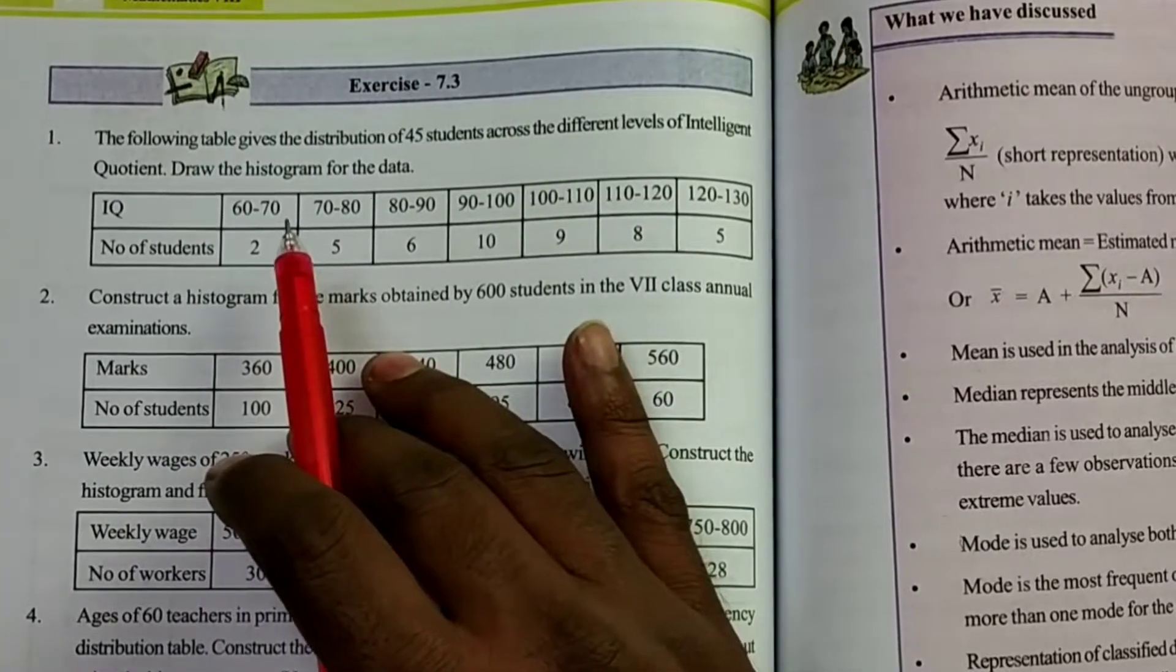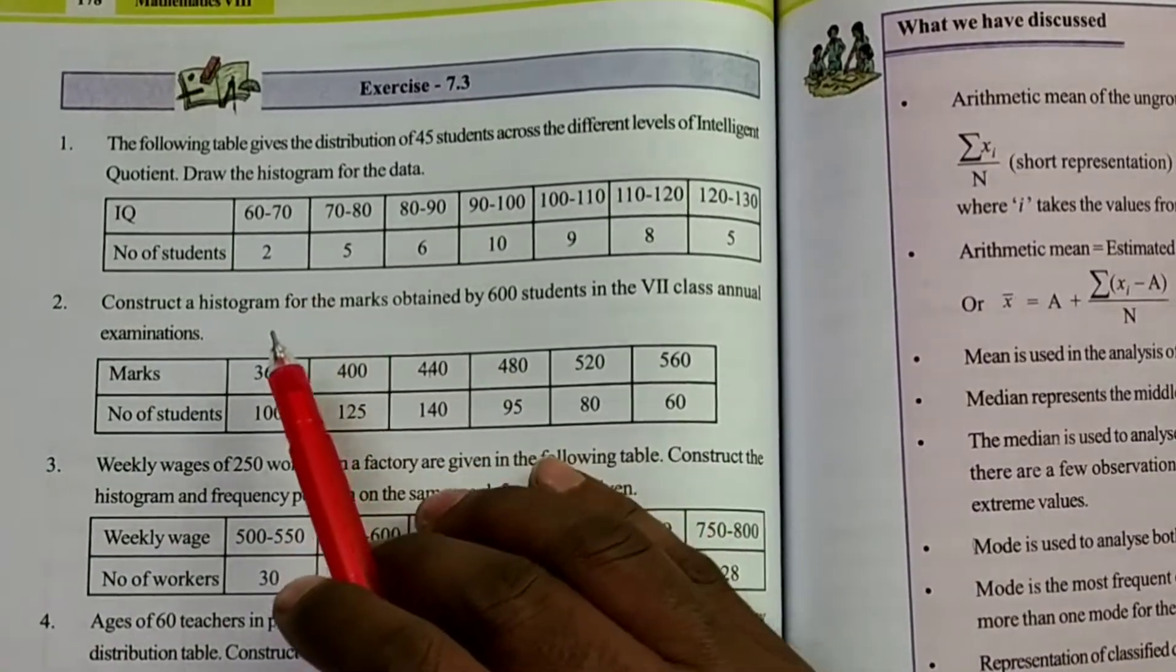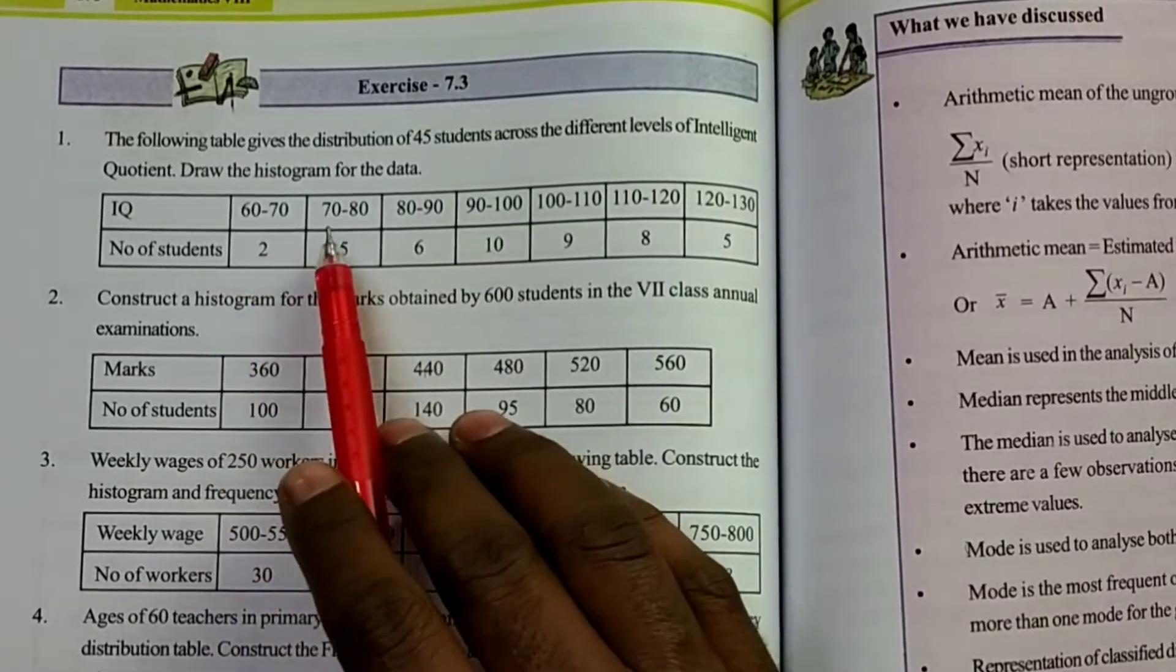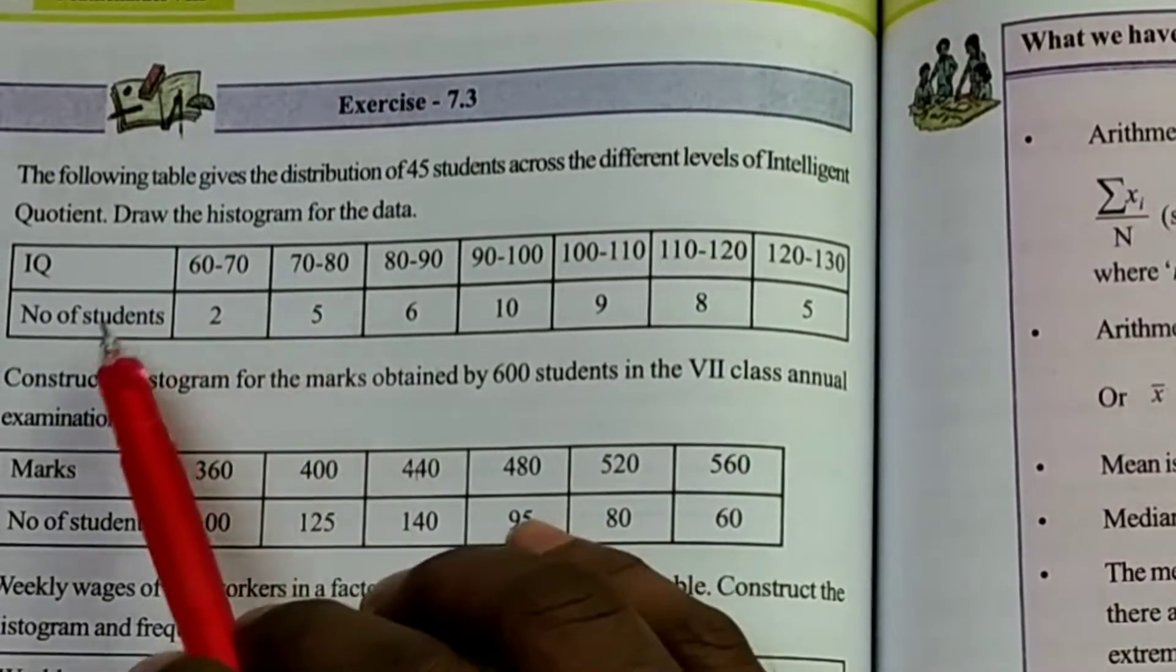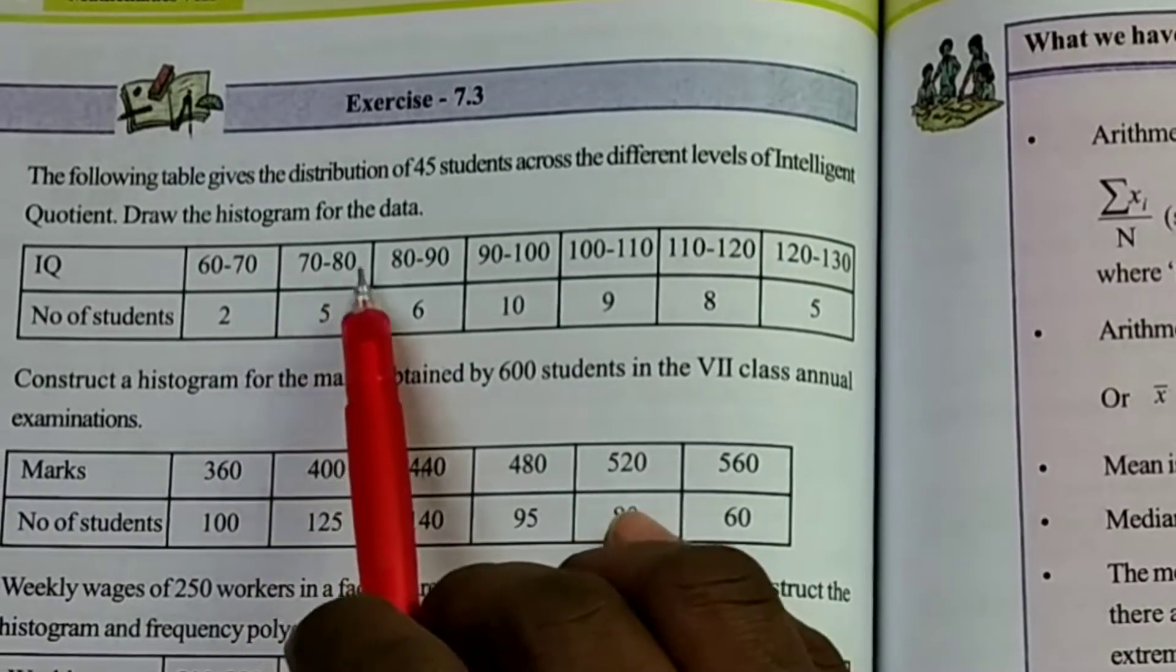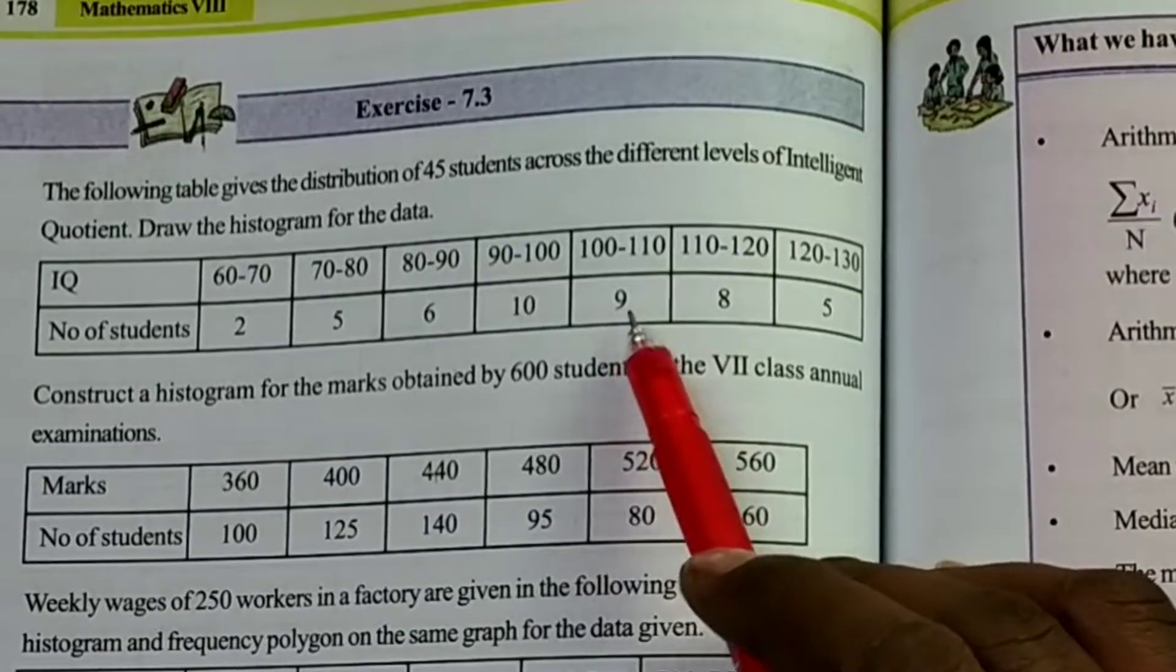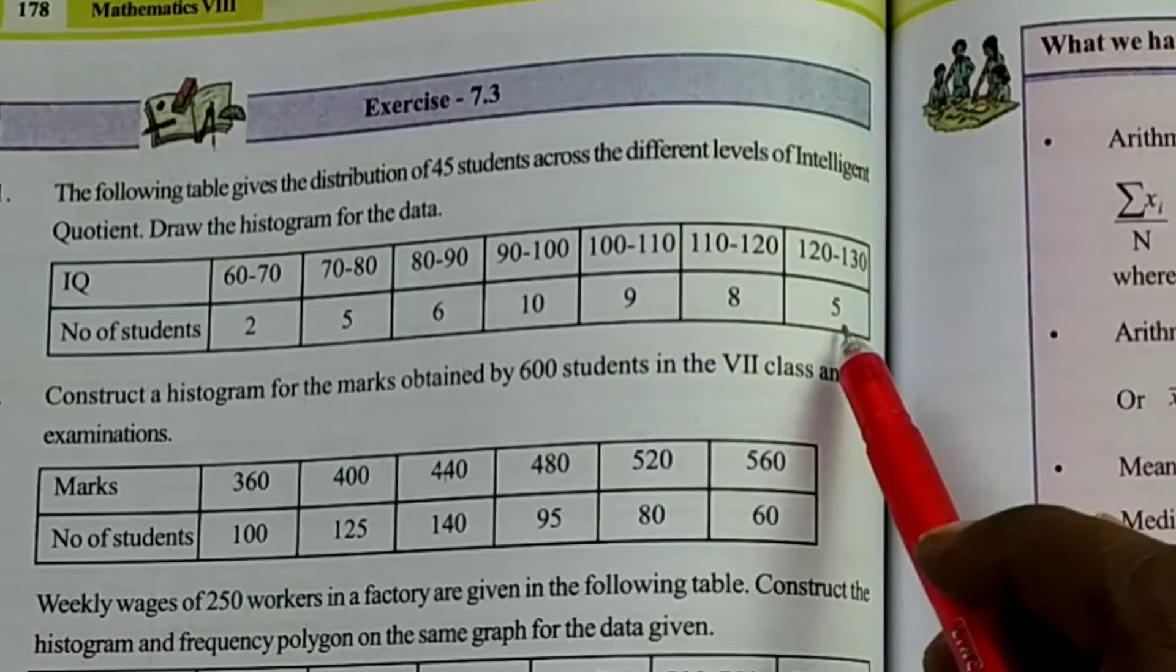Histogram consists of rectangles. So on the graph sheet, we have to draw the rectangles with same width and different lengths. We consider the frequency as the lengths and 60, 70, 70 to 80 as the same width. IQ level 60 to 70, there are 2 students. 70 to 80, there are 5 students. 80 to 90, 6 students. 90 to 100, 10 students. 100 to 110, 9 students. 110 to 120, 8 students. 120 to 130, 5 students.